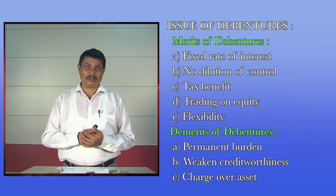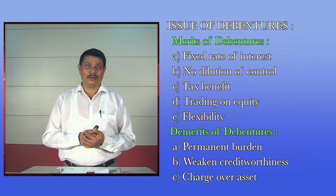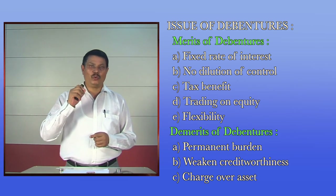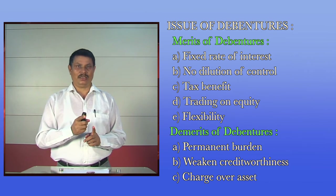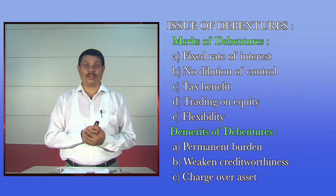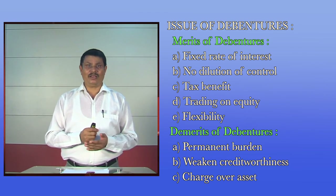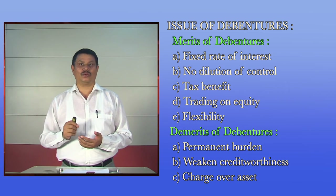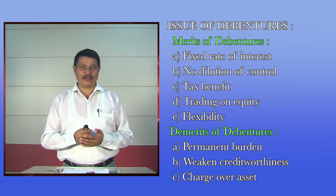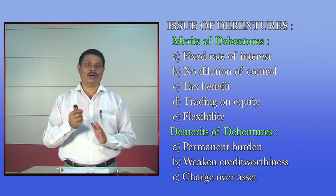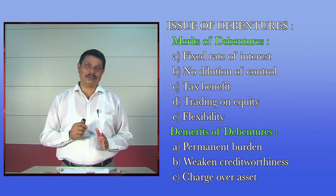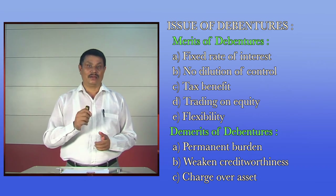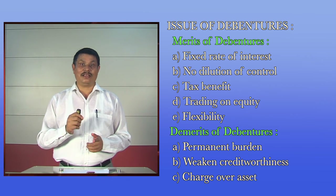Debentures also have some demerits. Number one is permanent burden — since payment of interest to debenture holders is fixed, it puts a real burden on the company, becoming risky when profits are low. Another demerit is that excessive issue of debentures weakens the creditworthiness of the company and restricts the capacity for further borrowings. Another demerit is charge on assets — issue of debentures creates a charge over the assets, which again weakens the borrowing capacity of a company.